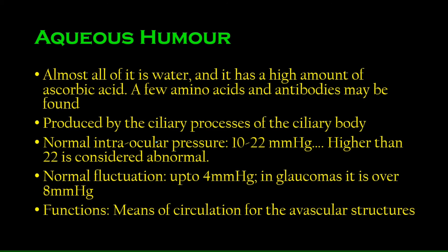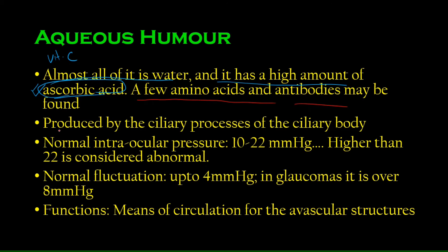Aqueous humor is mostly water — nothing too special about it — although it has a high amount of ascorbic acid, which is vitamin C. It may also contain some amino acids and antibodies. The aqueous humor is produced by a part of the ciliary body called the ciliary processes — finger-like projections lined by specialized epithelia.